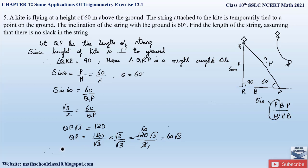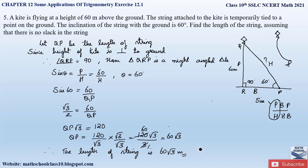Therefore, the length of the string is 60 root 3 meters. The height of the kite is given in meters, so we write the length of the string also in meters. This is how we solve this question.